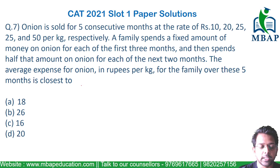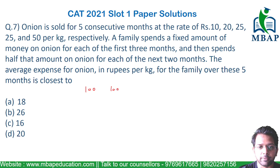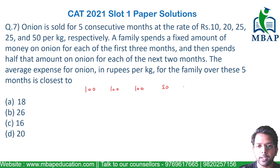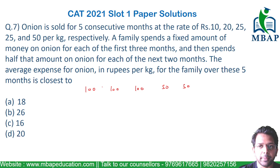Let's assume for the first three consecutive months I am spending 100 rupees in each of the three months. For the fourth and fifth month, I am spending half of the amount — so 50 rupees in each of those months.